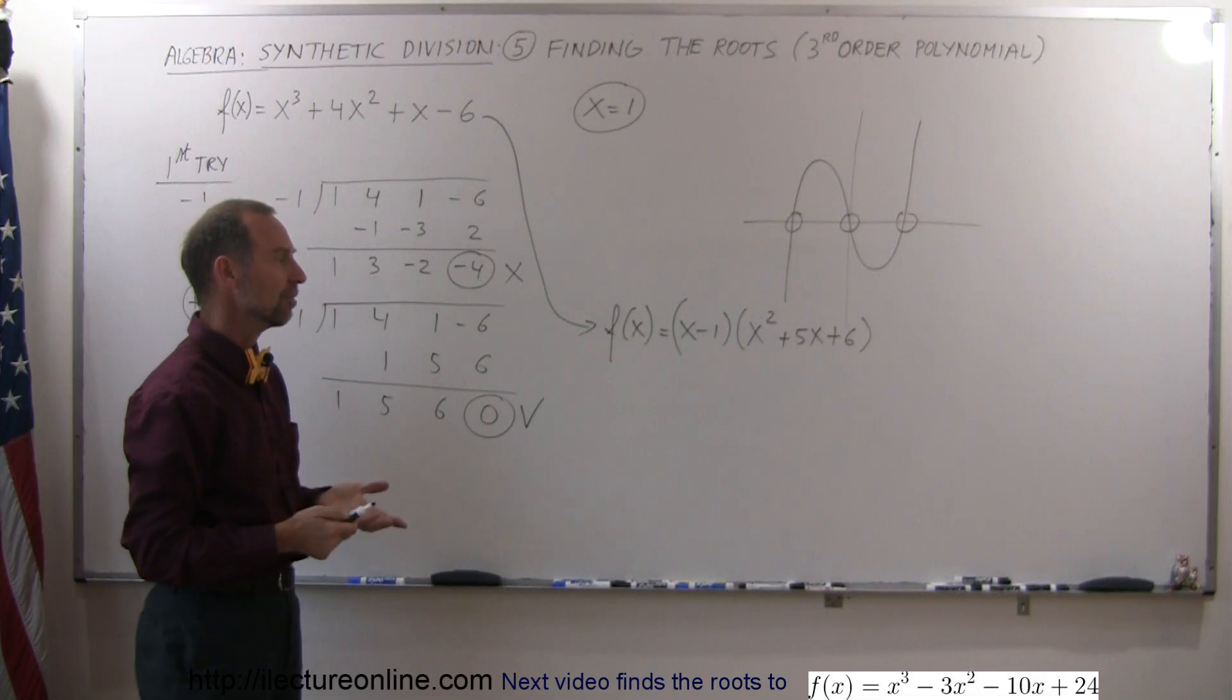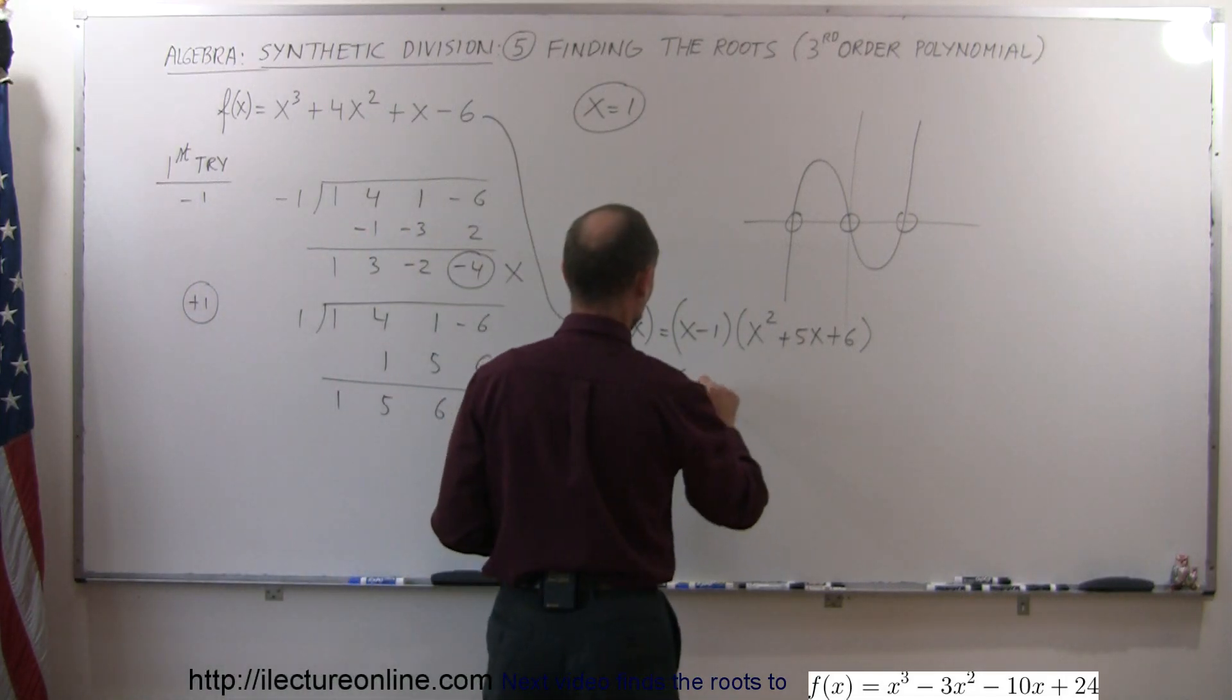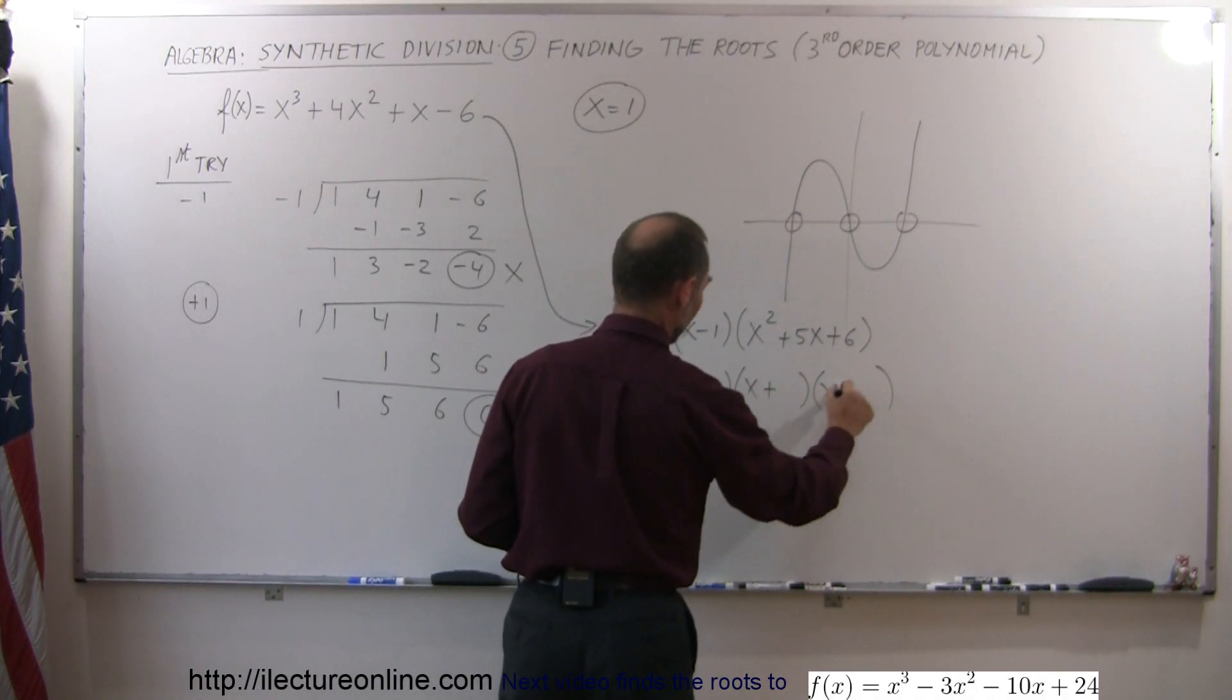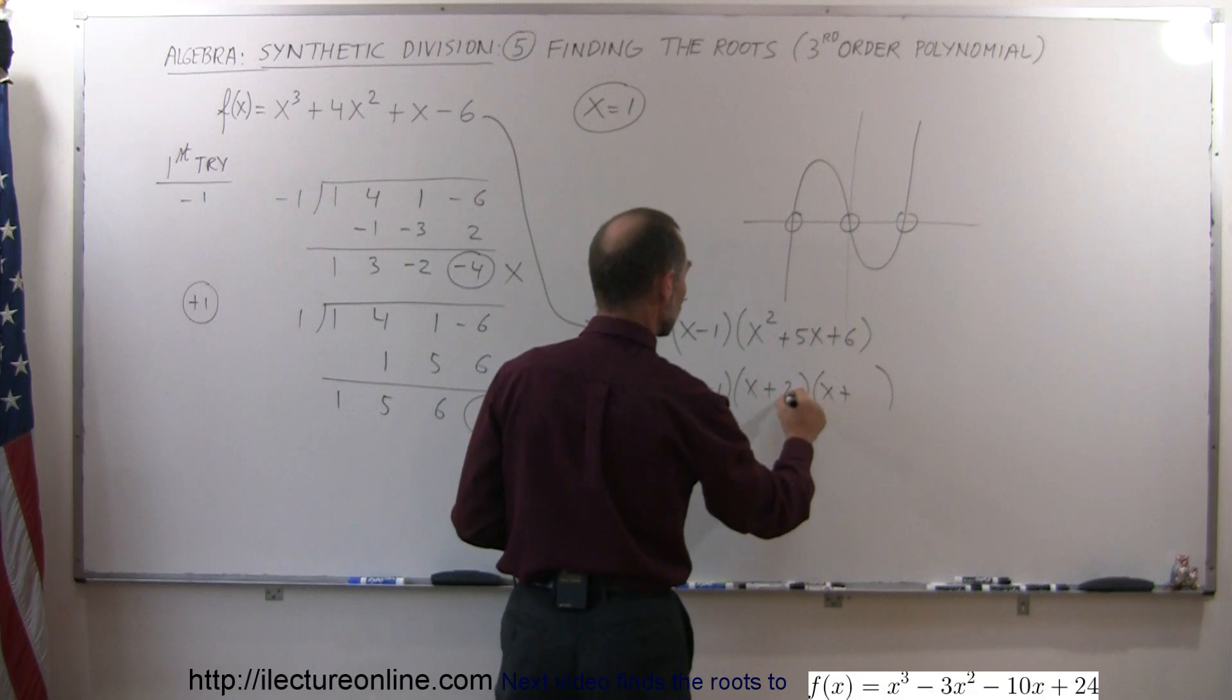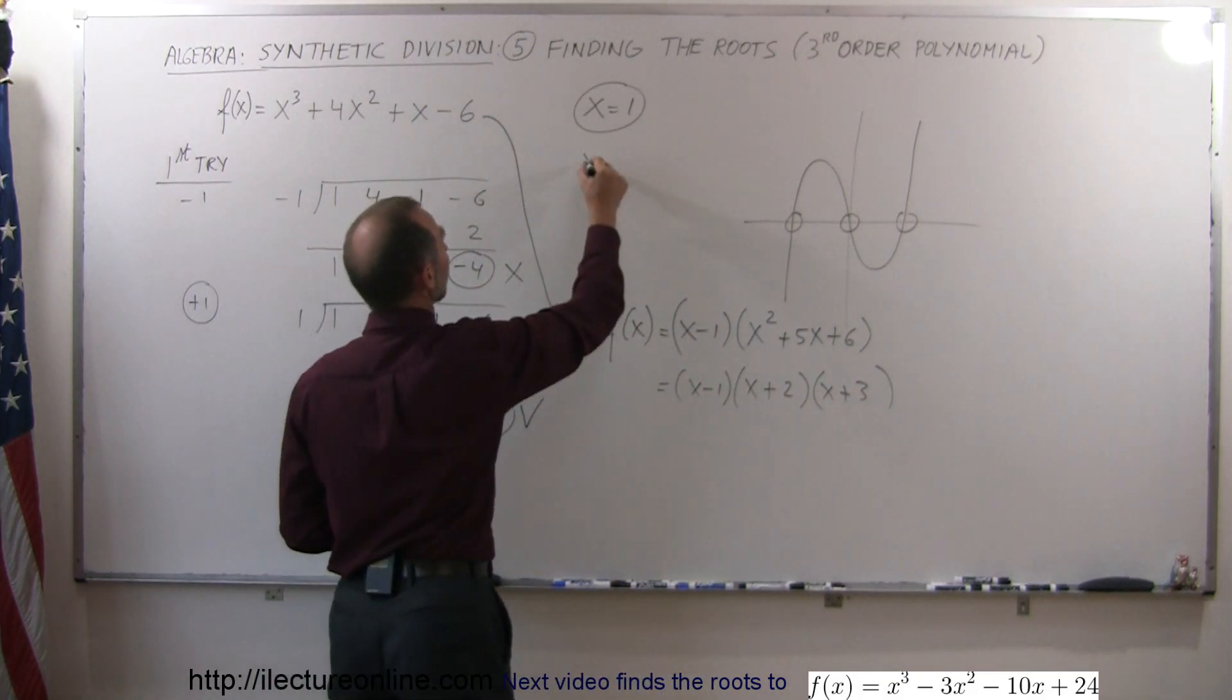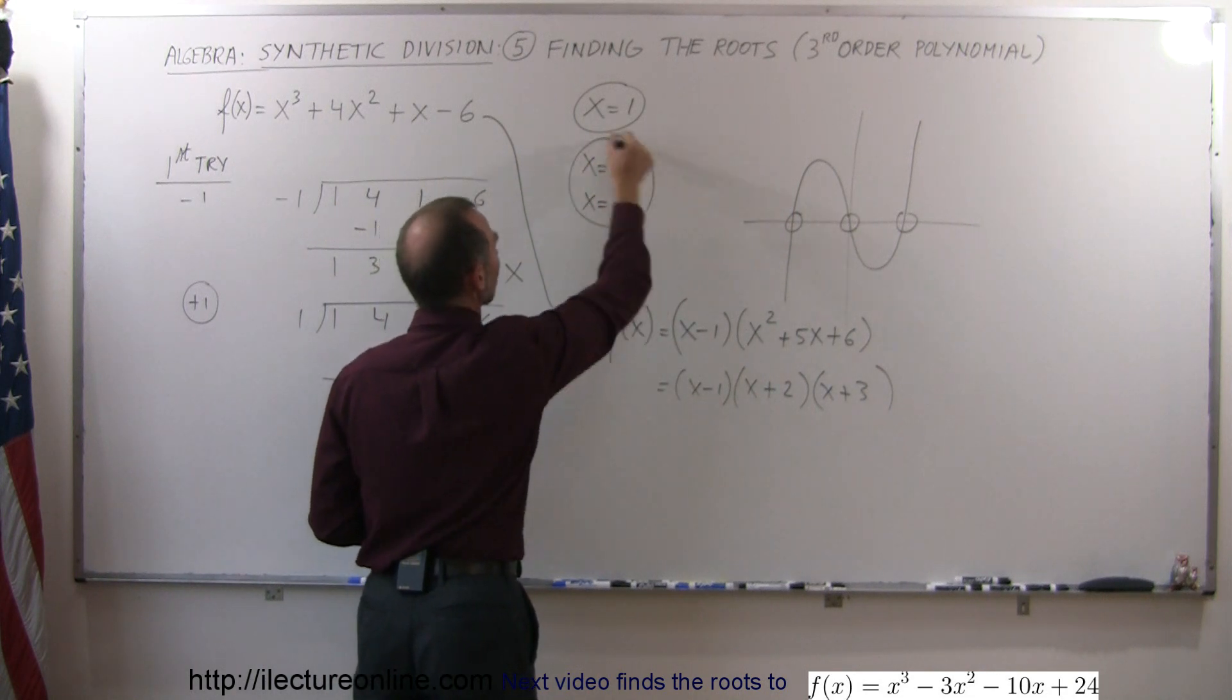Now, that is actually relatively easy because we know how to factor that. So this can be written as x minus 1 times, we get an x and an x, a plus and a plus. And of course, I need two numbers. When you add them, you get 5. When you multiply them, you get 6. And that would, of course, be 2 and 3. That means x equals minus 2 and x equals minus 3 are the other two roots.